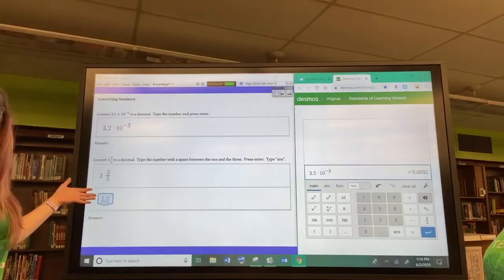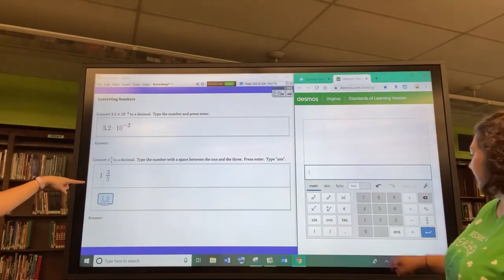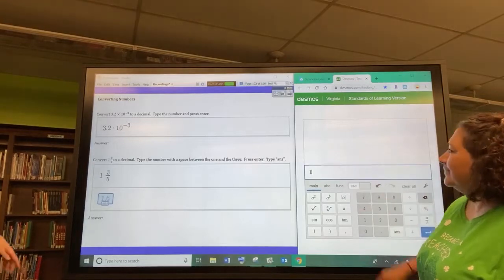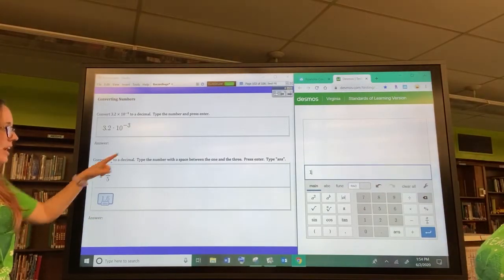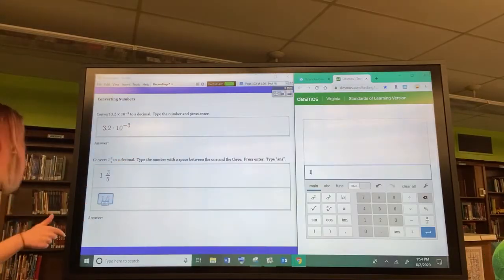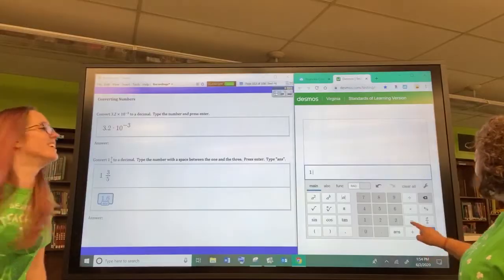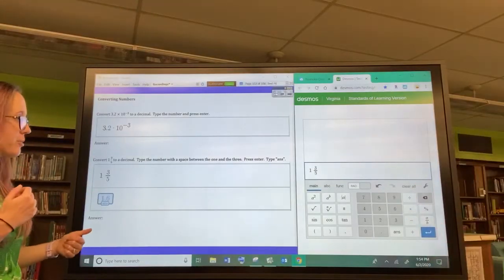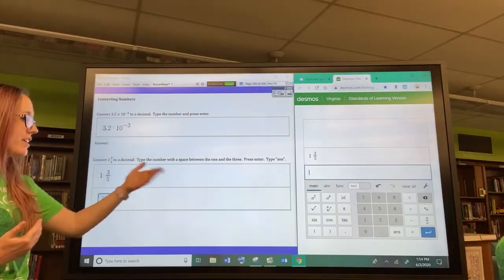One of the other things you can do that you could not really do on the handheld is mixed numbers. So I'm going to have to help Ms. Voss out on this one. But what you do is you type the whole number and then you hit the space bar, which she will hit behind the board, and then you can type the fraction part. And when you go to the next line and hit the answer key, it will change it to a decimal for you.